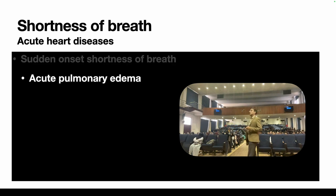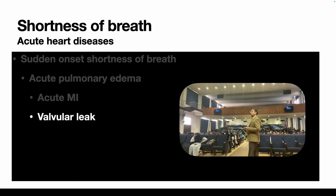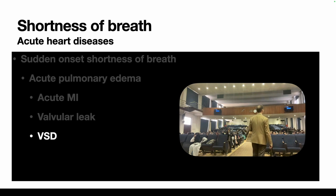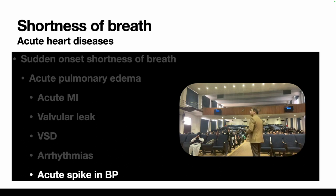Conditions causing acute pulmonary edema include: acute MI, acute valvular regurgitation (following MI or infective endocarditis), acute VSD (a complication of MI), arrhythmias, or a sudden acute rise in blood pressure — called flash pulmonary edema. An example of acutely spiking blood pressure is pheochromocytoma; drug interactions can also cause acute rises. All these can precipitate acute shortness of breath.